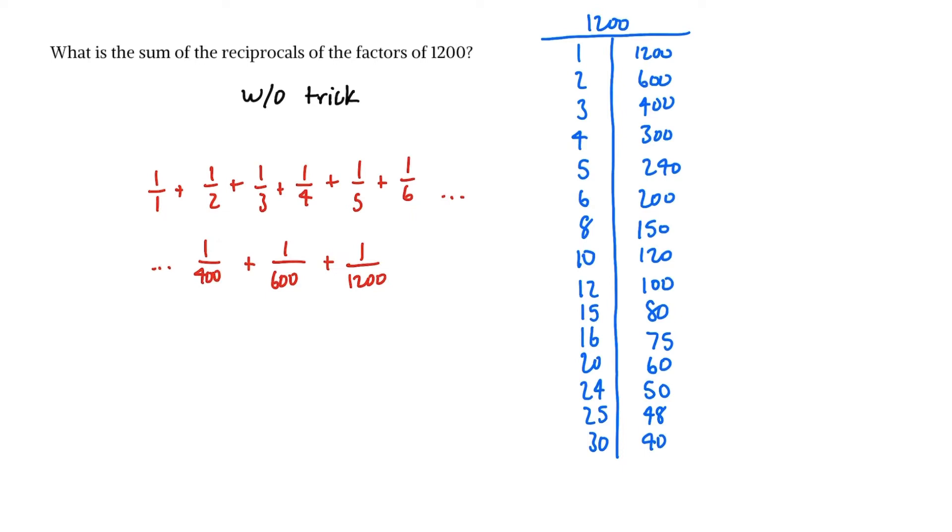1/1 + 1/2 + 1/3 + 1/4 and so on until 1/400 + 1/600 + 1/1200. Really, the only thing I have to say for this is good luck. There are so many things that could go wrong—whether you add something incorrectly or forget a number, the possibilities are endless. I'll reveal the answer after I show